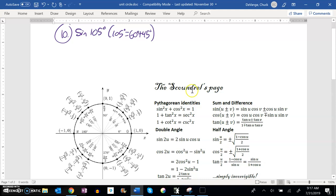So I'm going to take a peek at my Scanlon's page, and if I'm breaking this up by addition, I'm going to think of this as sine of 60 degrees plus 45 degrees.